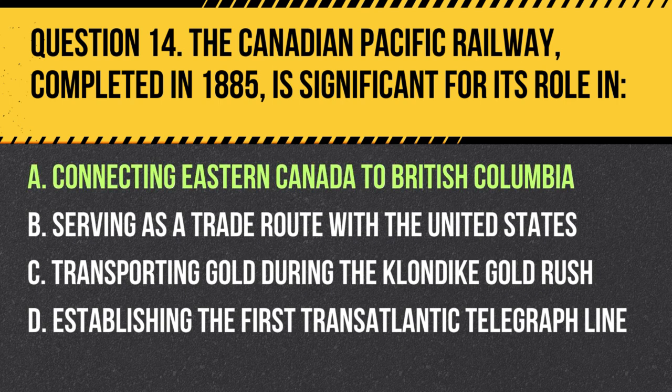Answer: A. Connecting eastern Canada to British Columbia. The Canadian Pacific Railway was a crucial component of the Confederation, linking the country from coast to coast.